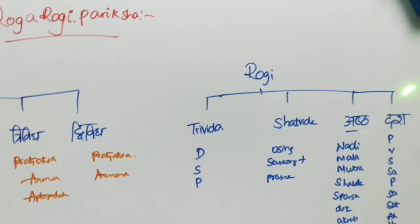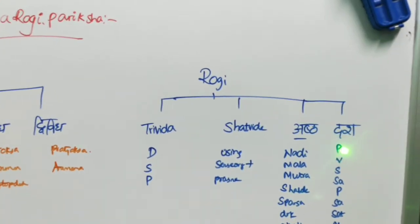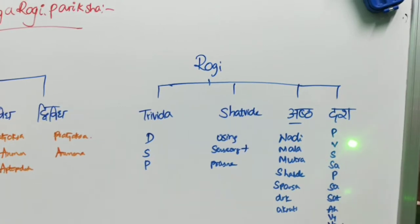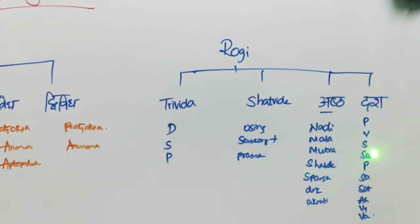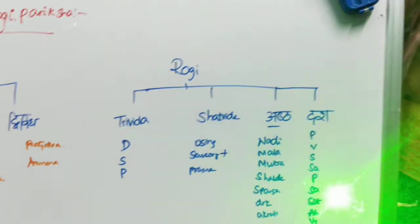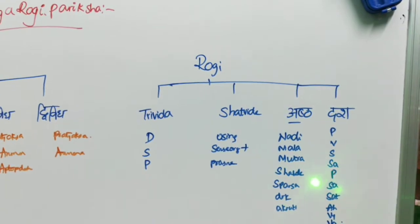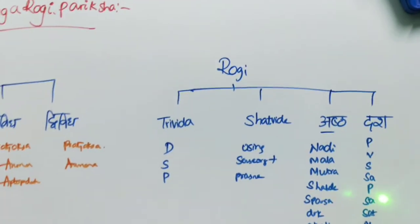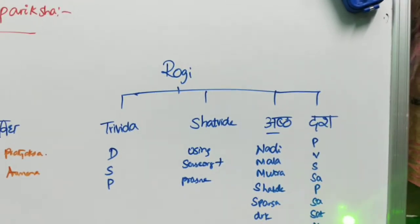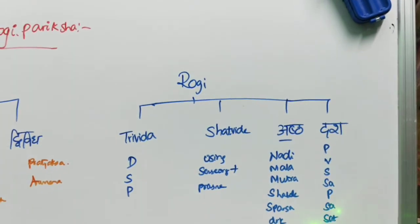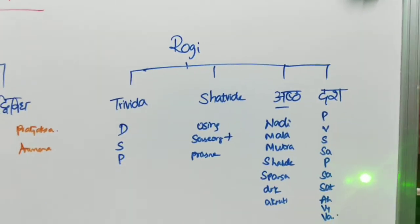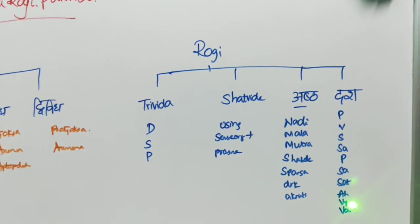In Prakriti we decide to which Prakriti (constitution) a person belongs. Vikriti means what morbidities are manifested in him. Sara Pariksha determines which of the seven Saras — Rasa, Rakta, Mamsa, Meda, Asthi, Majja, Shukra — the person belongs to. Samhanana means inbuilt strength. Pramana refers to the quantity and quality of Rasa, Rakta, etc. present in the person. Sattva Pariksha assesses the state of mind. Ahara Shakti refers to digestive capacity (Jarana Shakti), examining how well the person digests food.